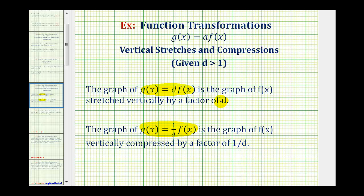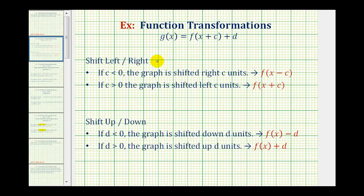In our case, we have a equal to three. For a shift left or right, if the value of c is negative or less than zero, the graph is shifted right c units — this is probably the opposite direction you might think, so if it's x minus c, it's right c units. And if c is positive or greater than zero, the graph is shifted left c units, so we'll have f of the quantity x plus c. Since our graph is shifted left two units, c will be positive two.